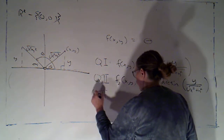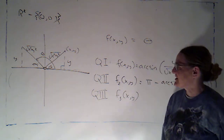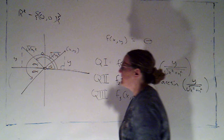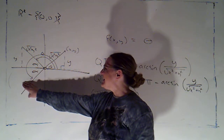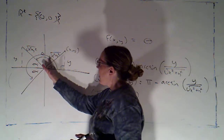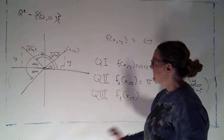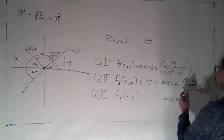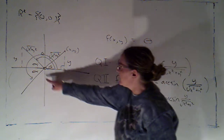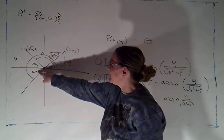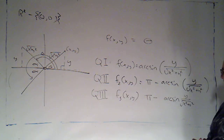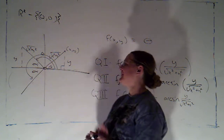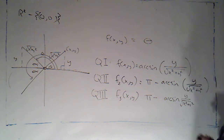Moving into quadrant three, for f₃(x, y) I'm still finding the angle made with the x-axis. The reference angle is α, but in quadrant three y is negative, so arcsin gives the negative acute angle — in quadrant four's range. Arcsin(y / √(x² + y²)) is the opposite of the reference angle, so I still want π − arcsin(y / √(x² + y²)), because that equals π + α, which is what I want. So the same formula works in both quadrants two and three.